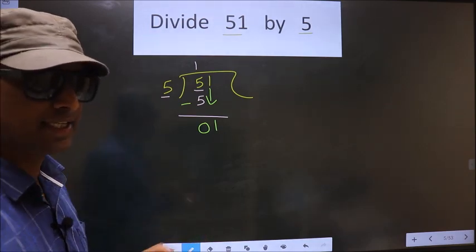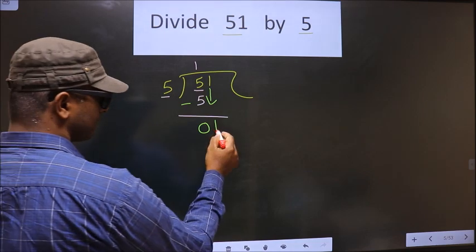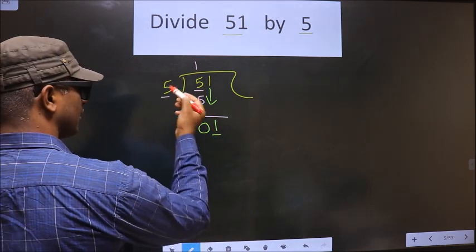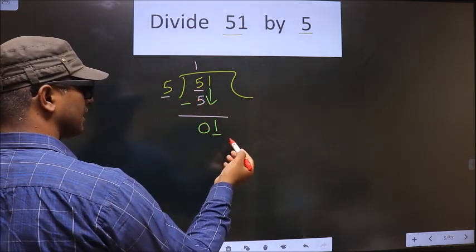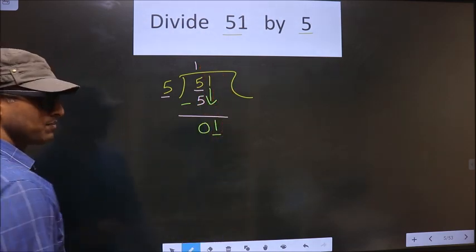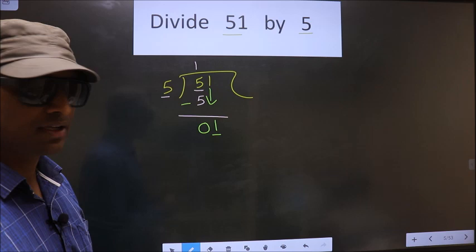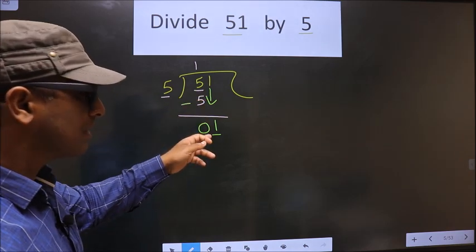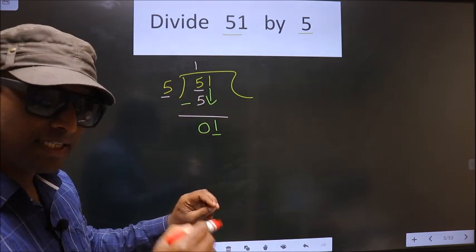See, here we have 1. 1 is smaller than 5. So what they do is they put the decimal here and take 0 here, which is wrong. You brought the number down, that's it. In the same step you should not take decimal and 0.